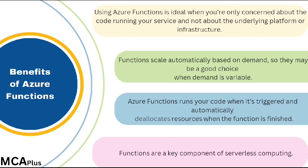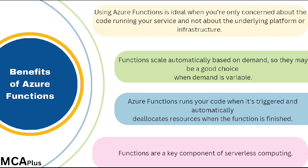Using Azure Functions is ideal when you're only concerned about the code running your service and not about the underlying platform or infrastructure. Functions are commonly used when you need to perform work in response to an event — often via a REST request, timer, or message from another Azure service — and when that work can be completed quickly, within seconds or less. Functions scale automatically based on demand, so they may be a good choice when demand is variable.